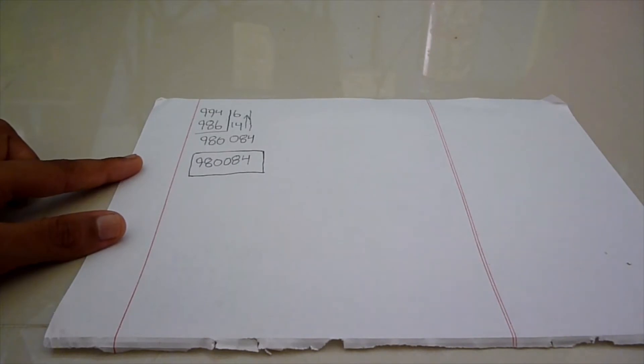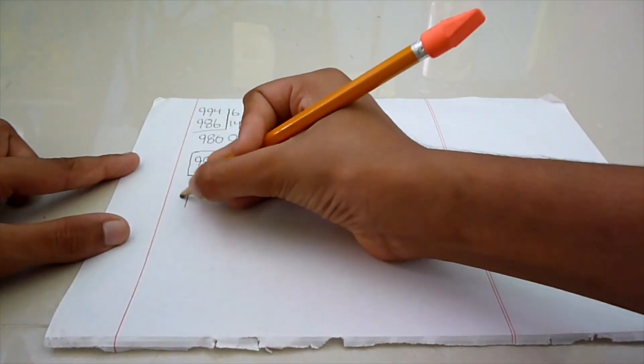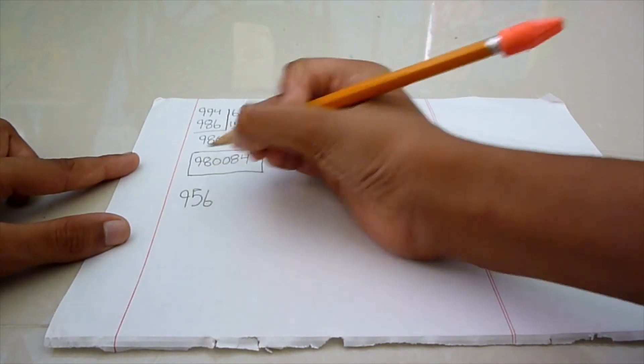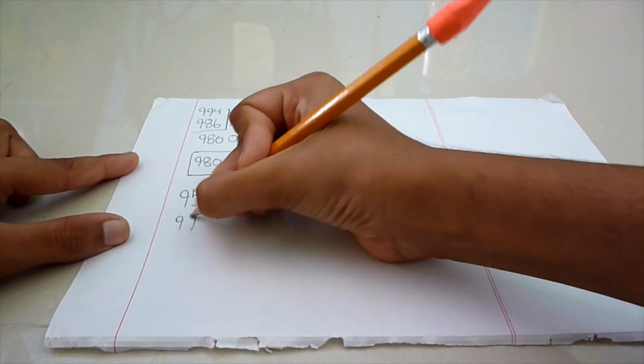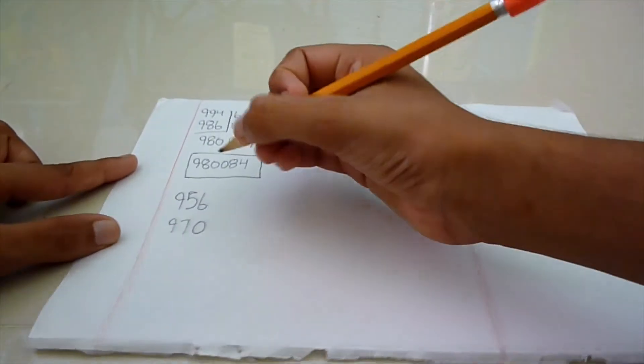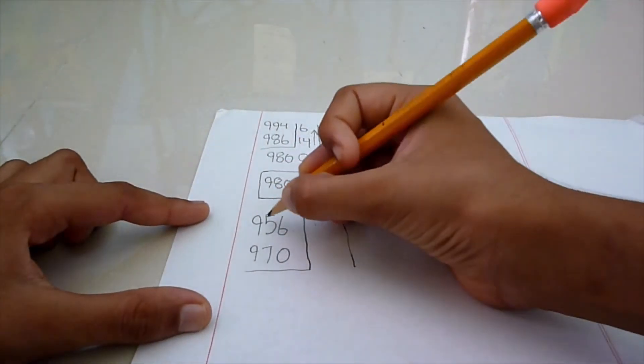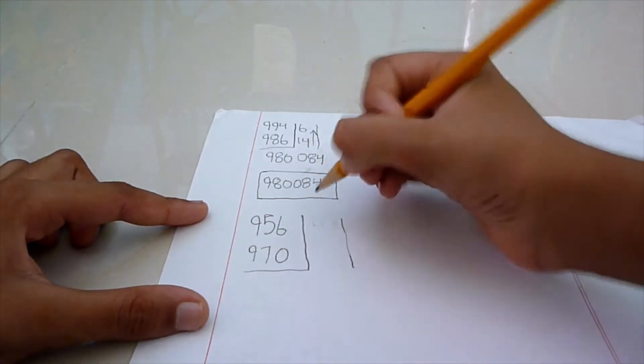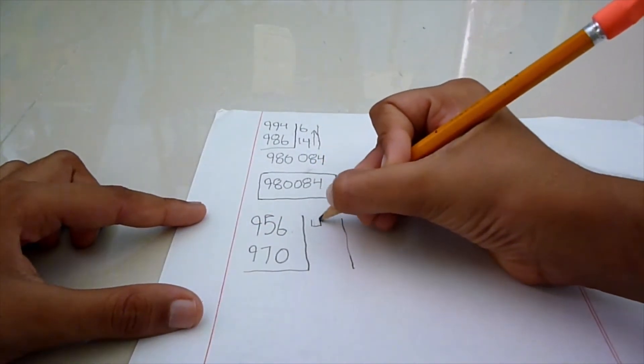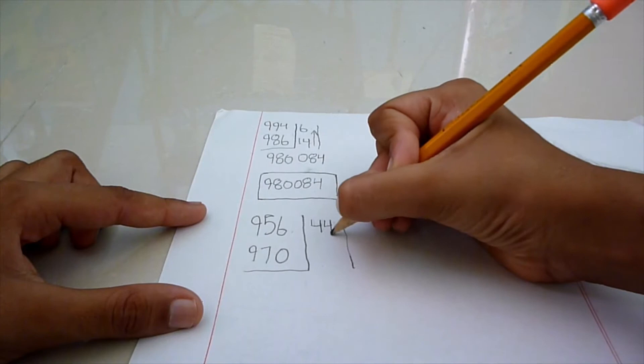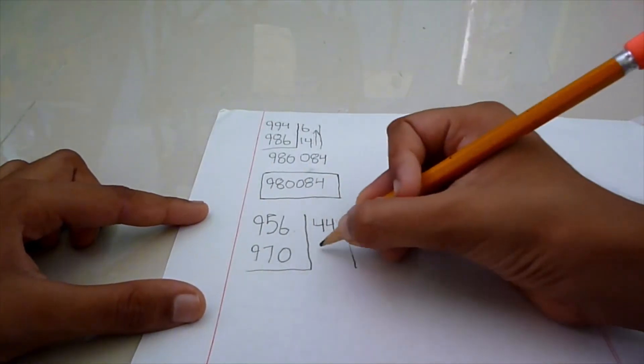Second example will be 956 multiplied by 970. Now, we have to subtract 956 from 1000, which will be 44, and 970 from 1000, which will be 30.